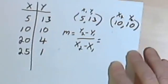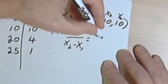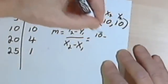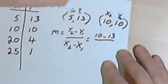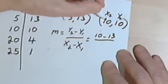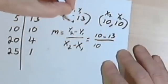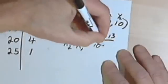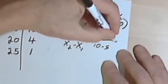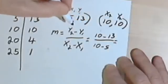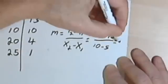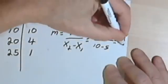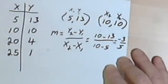The formula for slope is that slope, or m, equals y-sub-2 minus y-sub-1 over x-sub-2 minus x-sub-1. Plugging in the numbers: y-sub-2 is 10, minus y-sub-1 which is 13, over x-sub-2 which is 10, minus x-sub-1 which is 5. The slope between the first point and the second point is negative 3 over 5.